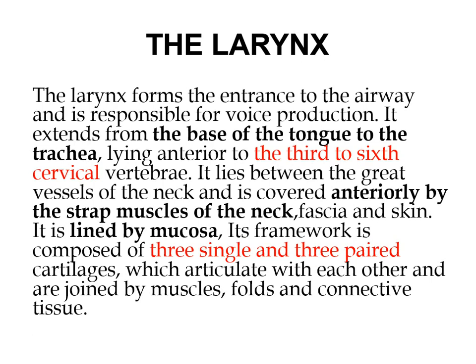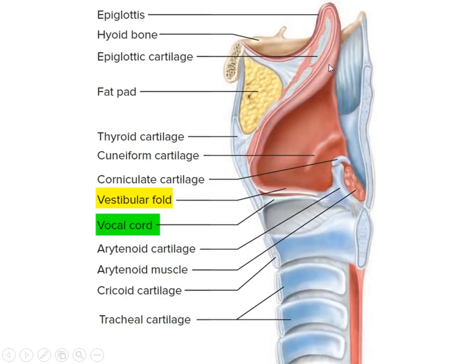Now, starting the larynx. The larynx forms the entrance of the airway and is responsible for voice production. It extends from the base of the tongue to the trachea, lying anterior to the third to sixth cervical vertebrae — so it spans from C3 to C6 — behind the great vessels of the neck. The cricoid cartilage is the first complete tracheal ring; all other tracheal rings are incomplete posteriorly.